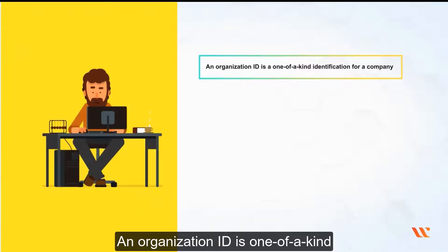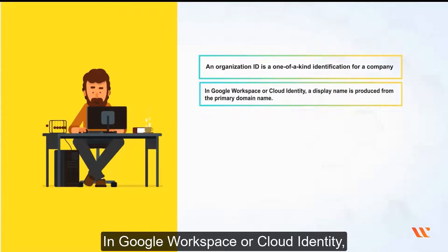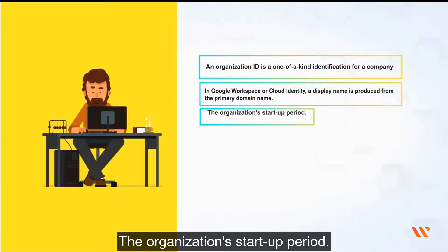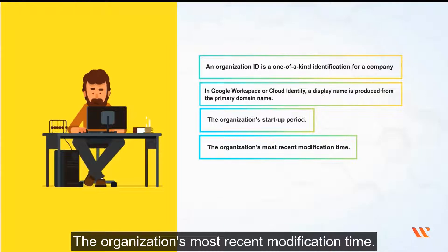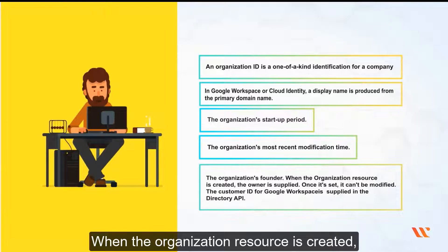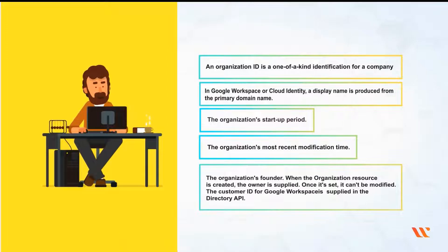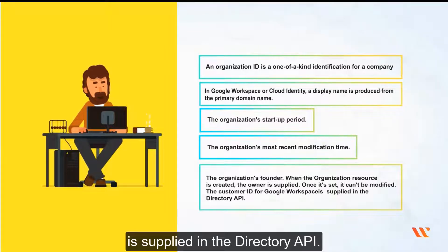An organization ID is a one-of-a-kind identification for a company. In Google Workspace or Cloud Identity, a display name is produced from the primary domain name. The organization startup period and the organization's most recent modification time are also recorded. The organization's founder is set when the organization resource is created; once set, it can't be modified. The customer ID for Google Workspace is supplied in the directory API.